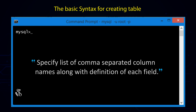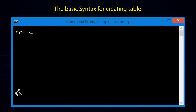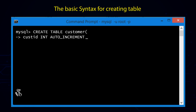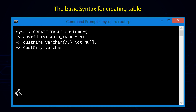Next is column_name — here you have to specify a list of comma-separated column names along with the definition of each field. Let us look into an example: CREATE TABLE customer (customer_id INTEGER AUTO_INCREMENT, customer_name VARCHAR(75) NOT NULL, customer_city VARCHAR(50) NOT NULL,